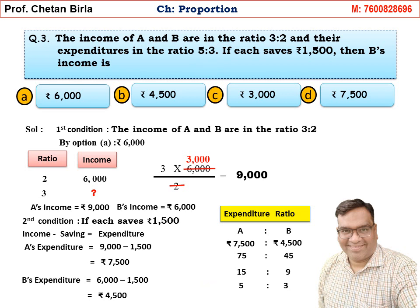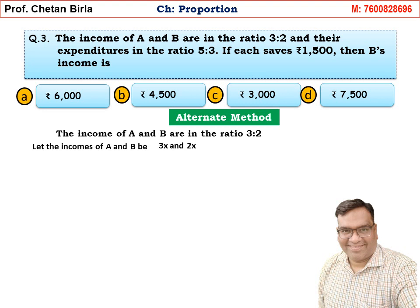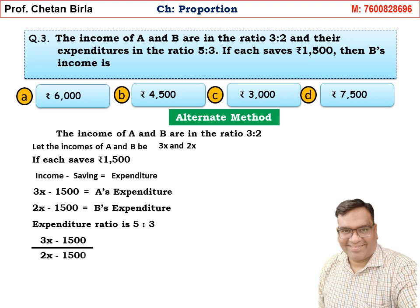The same sum can also be solved with an alternative algebraic method. Let the income of A and B be 3x and 2x. If each saves 1500 rupees, then A's expenditure = 3x − 1500 and B's expenditure = 2x − 1500. The expenditure ratio must be 5 is to 3, so: (3x − 1500) / (2x − 1500) = 5/3.